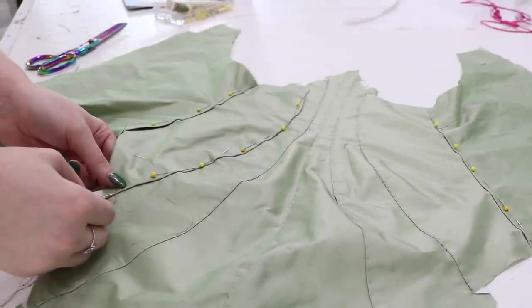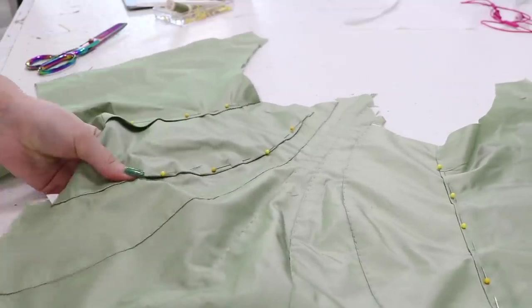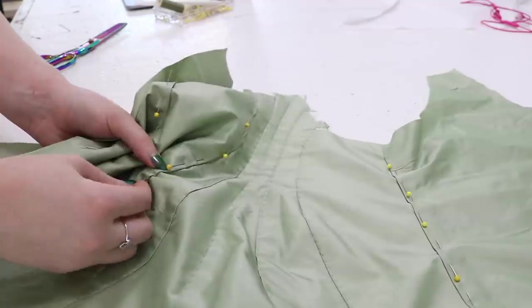Now with teeny tiny running stitches, I'm securing the pieces together as close to the folded edges as I can. And each stitch goes through all the layers of the fabric, so it's nice and secure.